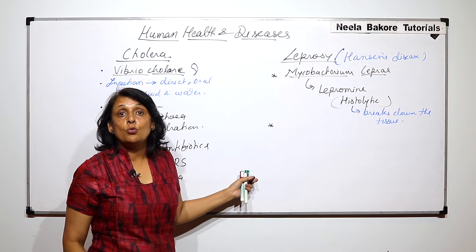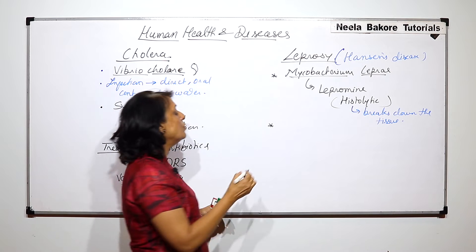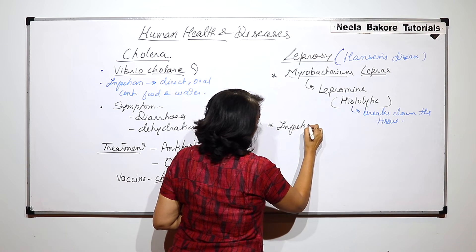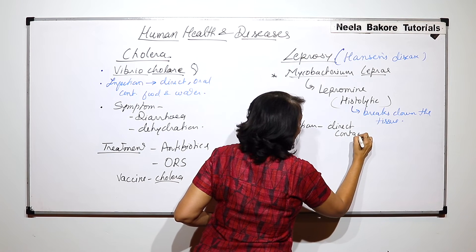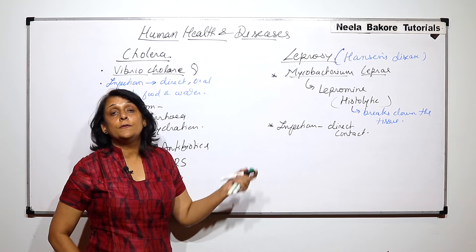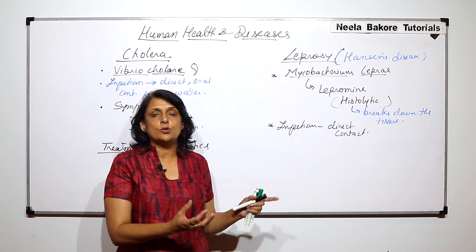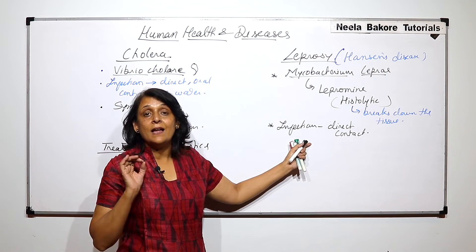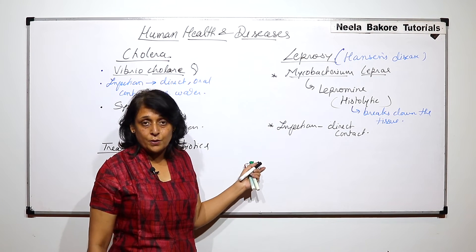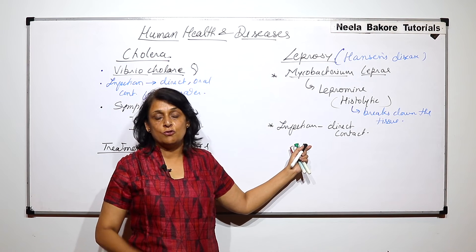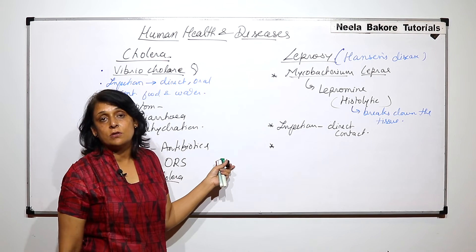Leprosy spreads through direct contact — if you touch that person the infection will spread. Treatment of leprosy patients is difficult because people are afraid of touching them. If unknowingly your body comes in contact with that person, the infection can spread, and that is why leprosy patients are isolated from society.